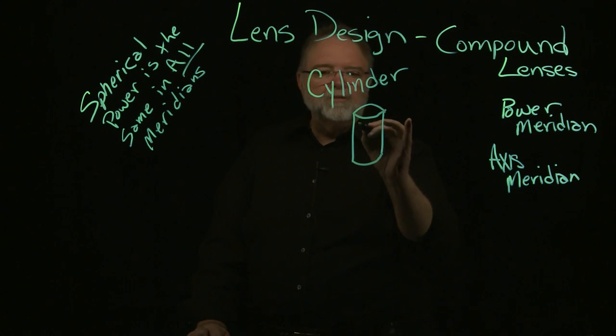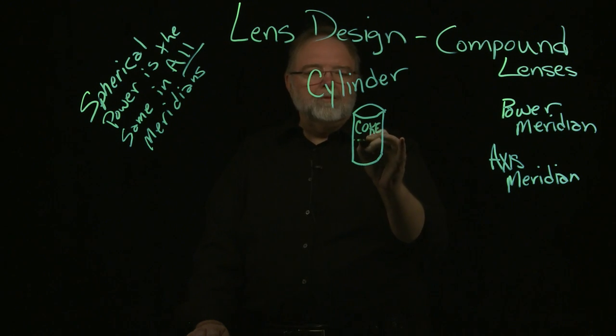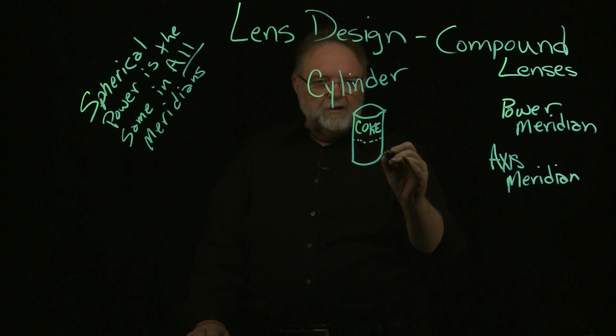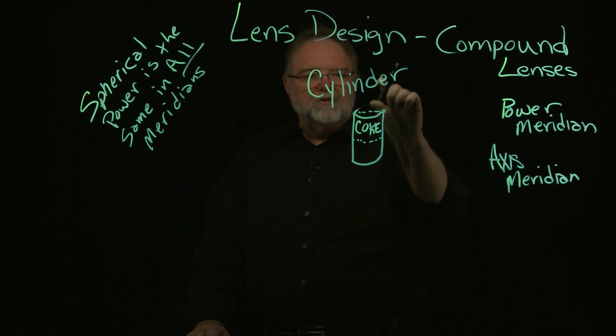Think of it in terms of a Coke can. So a Coke can, when you look at the side of the lens, this meridian. So you cut this in half and you have a cylindrical lens then.